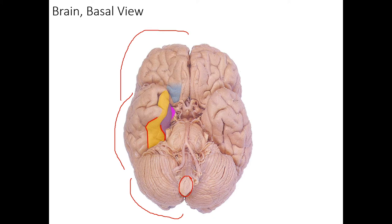Now let's move to the frontal cortex. We have an orbital gyrus in blue and a gyrus rectus — or straight gyrus — in green. Between those two we can see the olfactory bulb and tract, which I've circled in yellow on that one side.